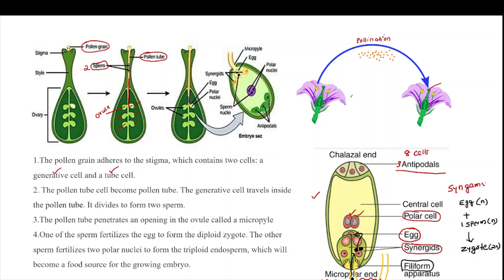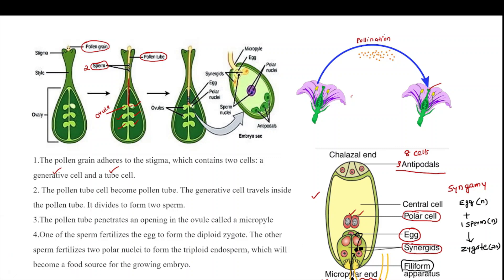The other sperm cell fuses with the two polar cells to form a triploid cell (3n). Two polar cells (2n) plus one sperm (n) form a triploid cell. This process is known as triple fusion.